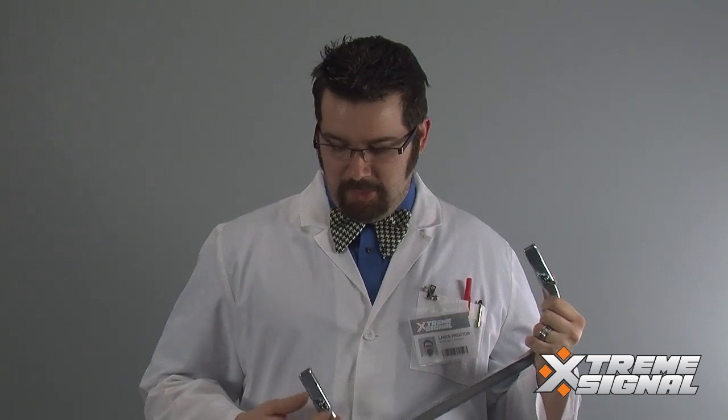Next, grab the mounting bracket. You're going to want to loosen these wing nuts on each side. This will allow these clamps to open up and attach to the back of the reflector on the antenna.